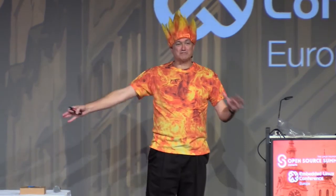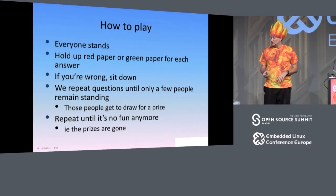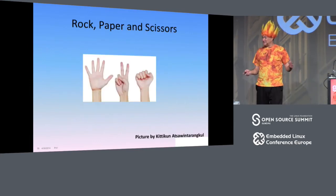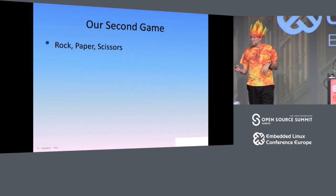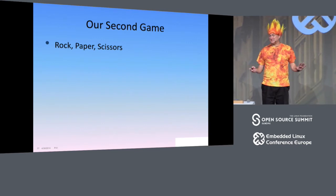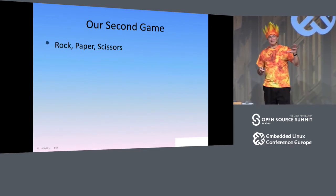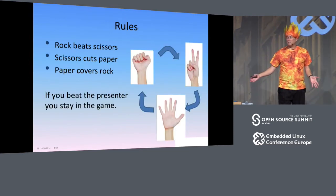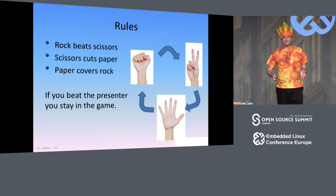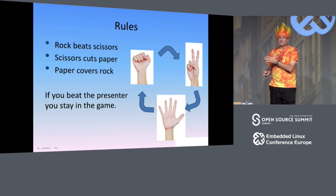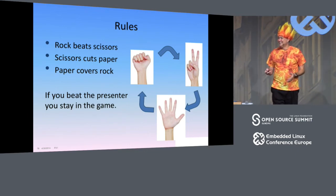Now it's time for just some bald-faced luck: rock, paper, scissors against the presenter. We tried a group version in Portland last year and it did not work. This is classic rock, paper, scissors: rock beats scissors, scissors cuts paper, paper covers rock. If you beat the presenter, you get to stay in the game. If you tie, you have to sit down — so we're going to knock out two-thirds of you at a go. That's why we end with this game.